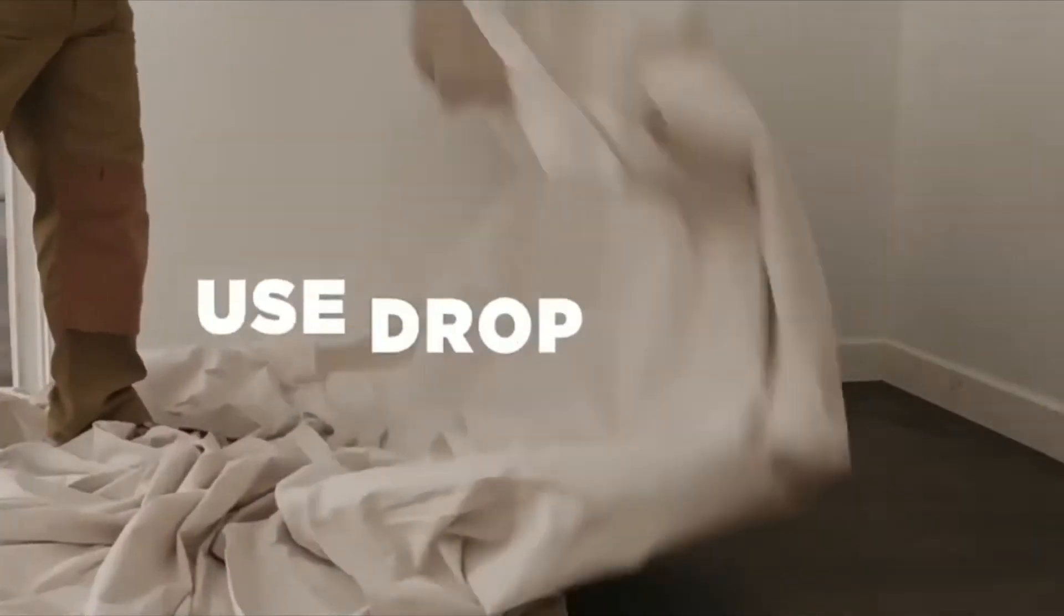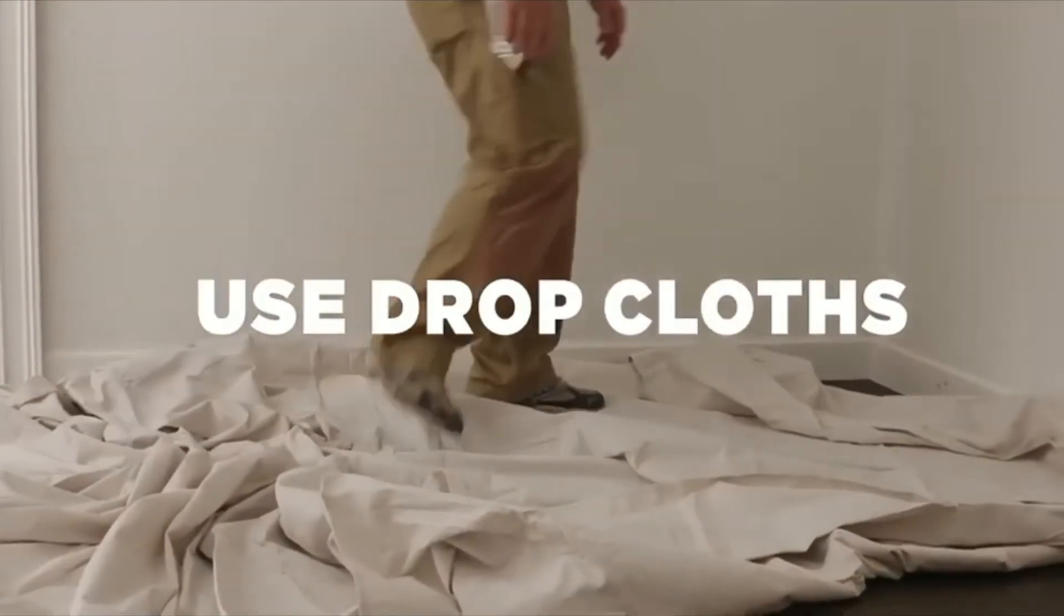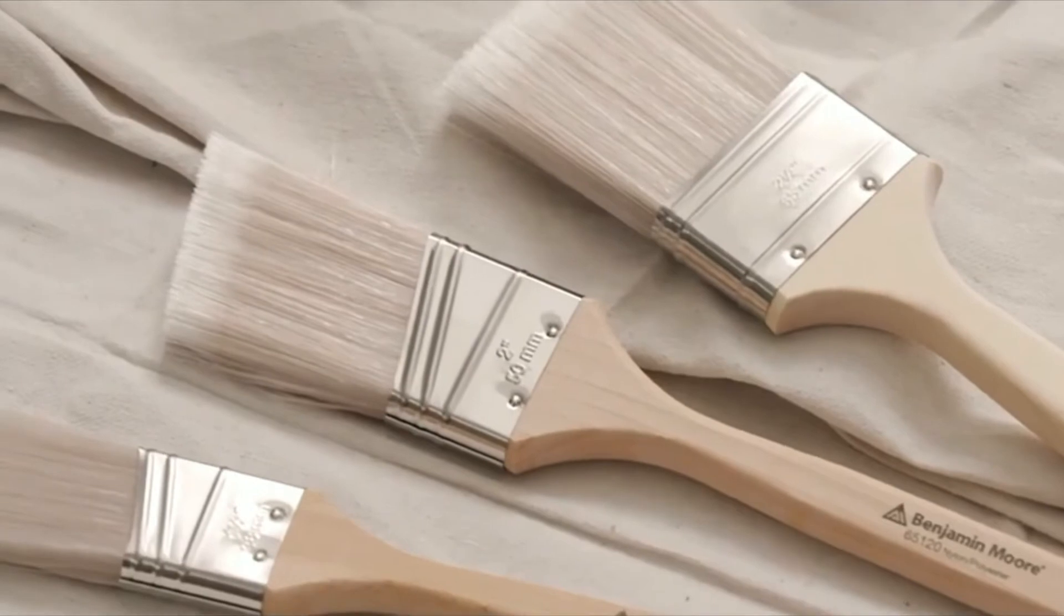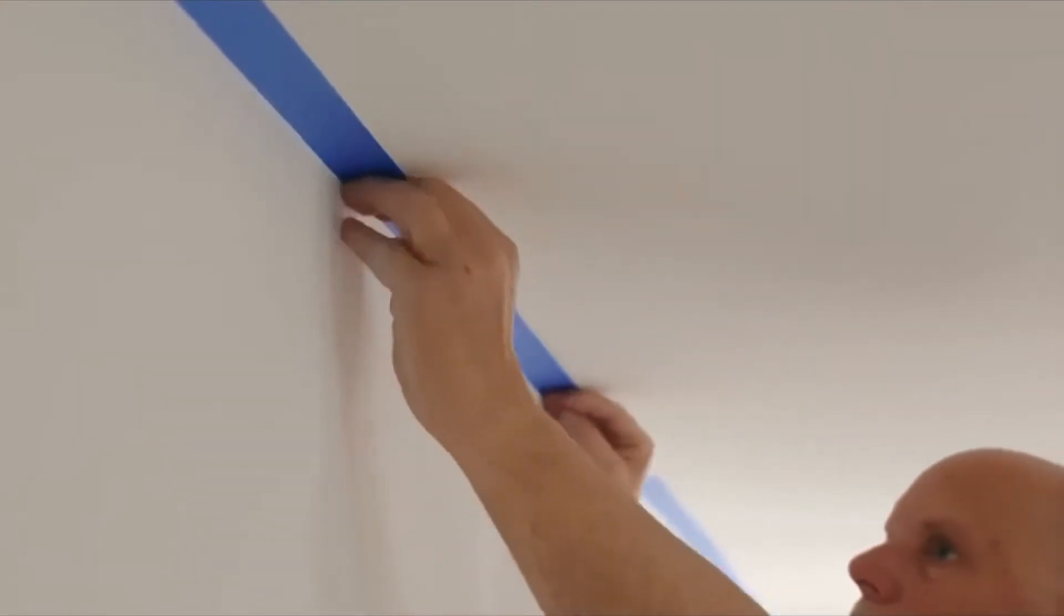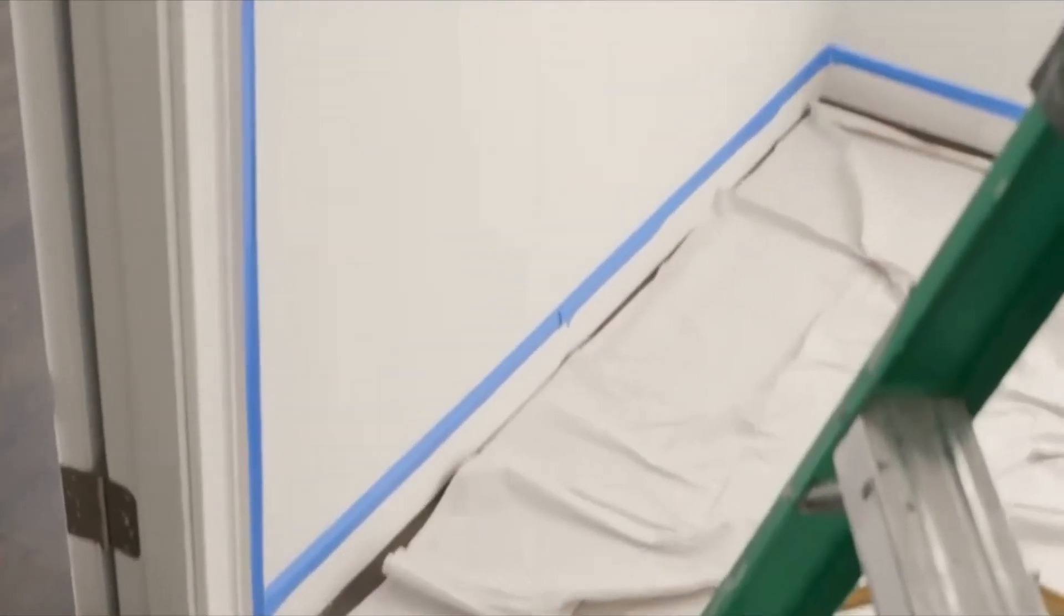Remove furniture or cover it with a drop cloth. A two and a half inch angle sash brush is the workhorse for all cutting in work. Some people choose to tape off the areas including the ceiling line, baseboard, and around windows and doors, but with a good quality brush you may not need to.